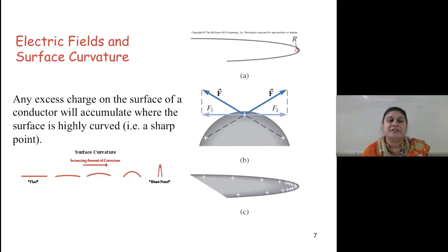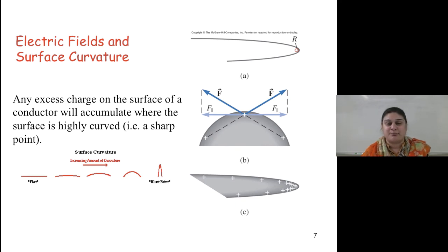Electric fields and surface curvature. Any excess charge on the surface of a conductor will accumulate where the surface is highly curved — for example, at a sharp point, like shown in the pictures here.